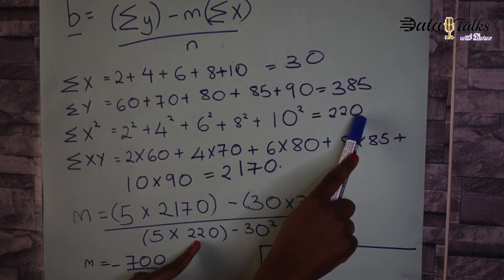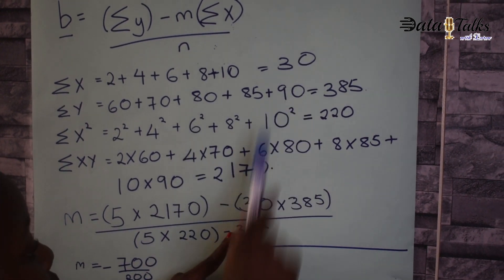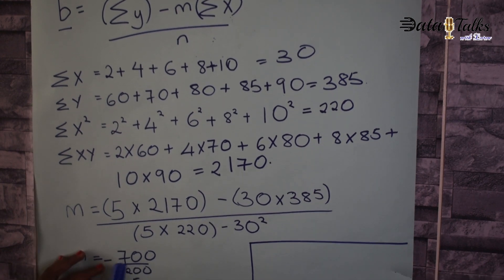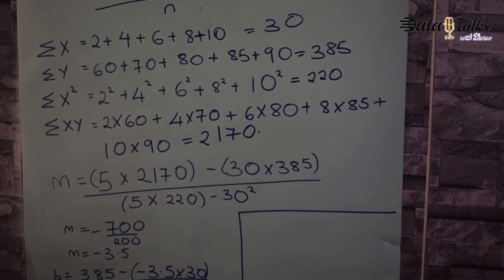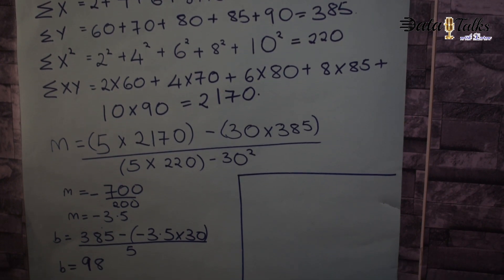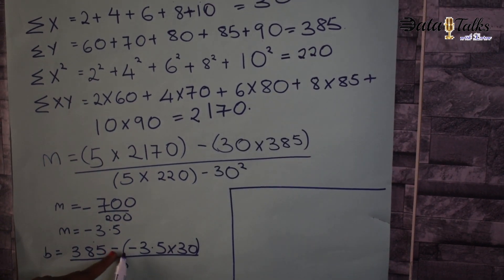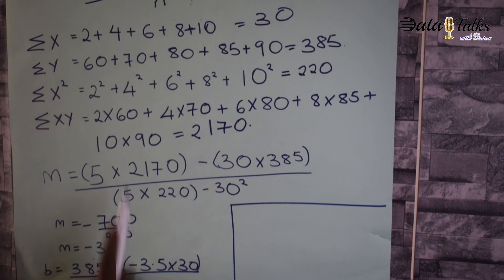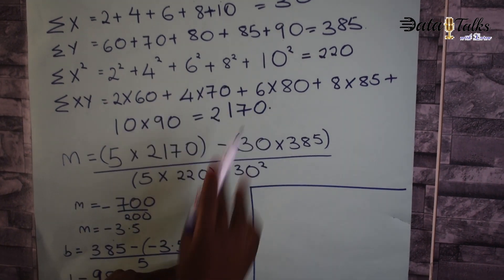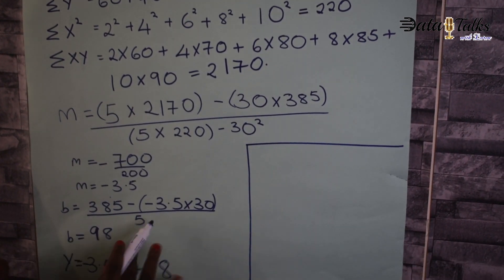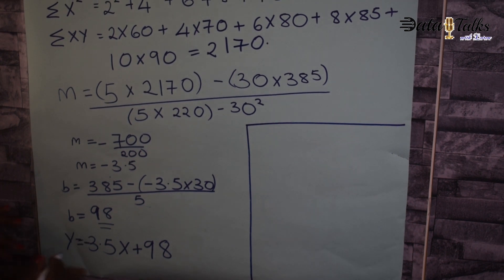That gives us negative 7700 divided by 200, so m equals negative 3.5. For b: summation of y (385) minus m (−3.5) multiplied by summation of x (30), divided by the number of entities (5), which gives us b = 98.